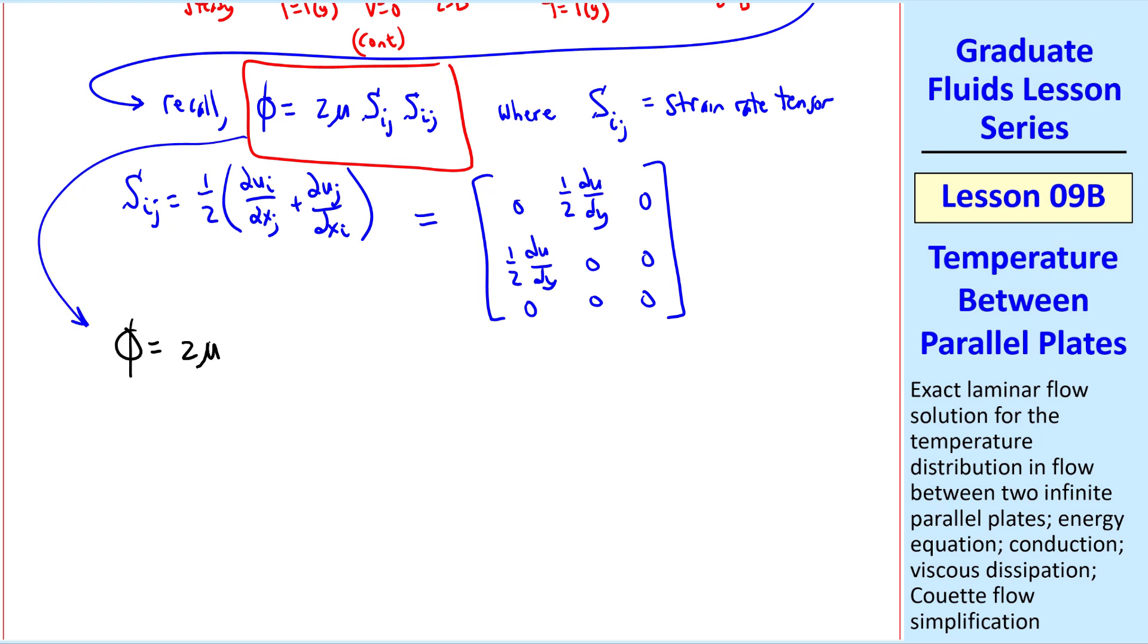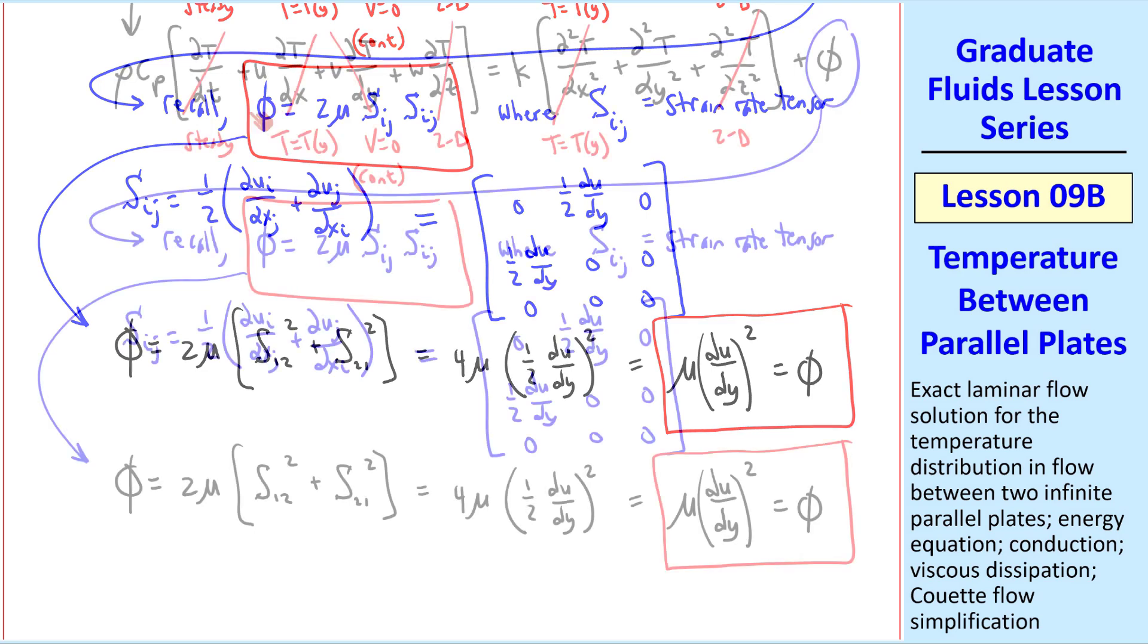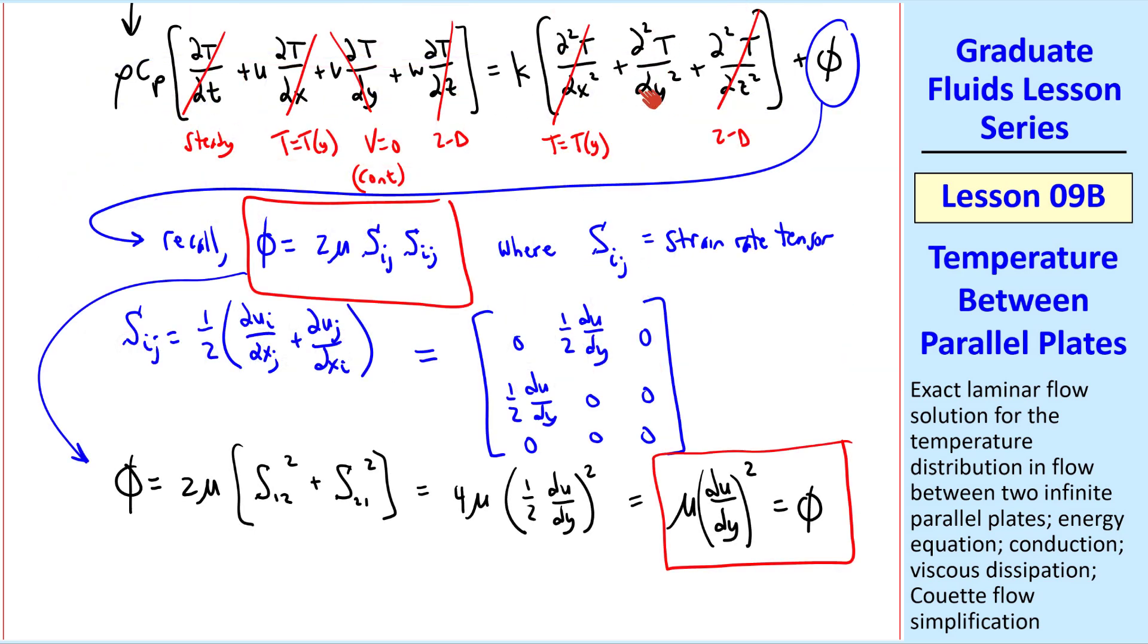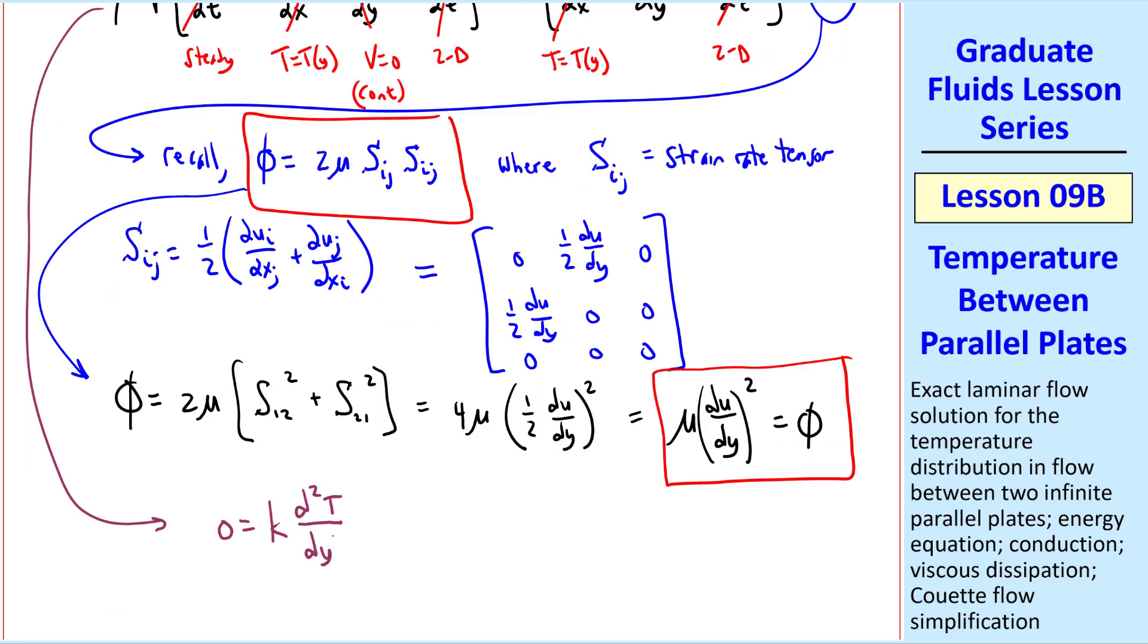Thus, phi equal 2mu, and since both i and j are summed, we sum all the possible combinations of these components, which reduces to S12 squared plus S21 squared. But again, these two are the same, so this becomes 4mu times 1 half du dy from here squared, and the 4s cancel out, and we end up with phi being mu du dy squared. Thus, our energy equation, which has only this term left, plus phi, reduces to 0 equal k d squared t dy squared plus mu du dy squared, which I'll call equation 5.